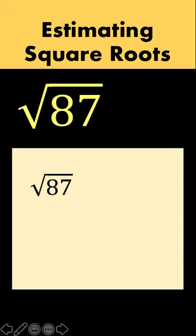You begin by looking for a perfect square that is lesser than 87. And that number is 81 because the square root of 81 is equal to 9. And then you get the difference between 87, this 87, and this 81. And you get a value of 6.